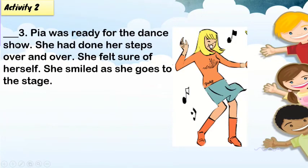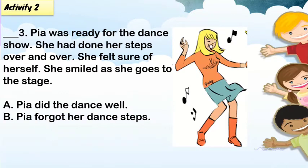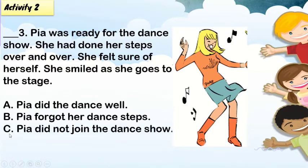Next, number three: Pia was ready for a dance show. She had done her steps over and over. She felt sure of herself. She smiled as she went to the stage. A: Pia did the dance well. B: Pia forgot her dance steps. C: Pia did not join the dance show. The answer is letter A: Pia did the dance well.